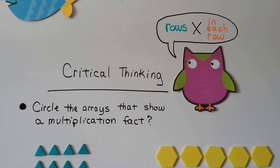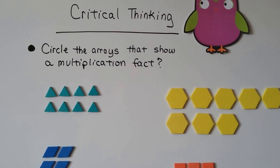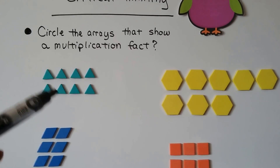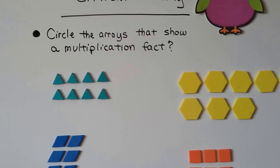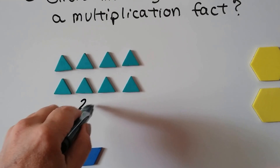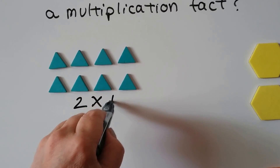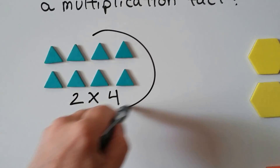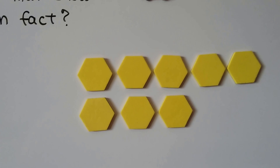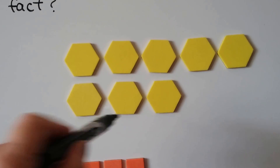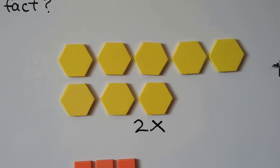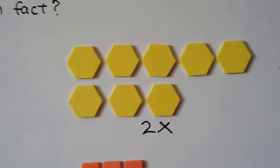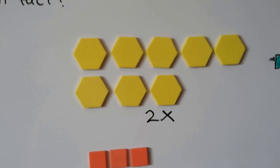Let's do some critical thinking. Little Owl is telling us that the first number is the rows and the second number is how many in each row. It says, circle the arrays that show a multiplication fact. The first array has a row of 4 and a row of 4 — 2 times 4 — so yes, that is a multiplication fact. The next one has 2 rows, but one has 5 and the other has 3. That's not an equal group, so that's not a multiplication fact.